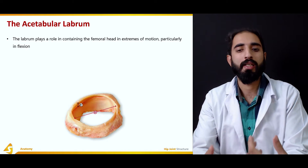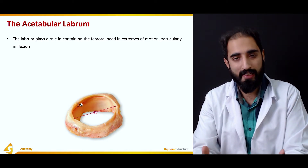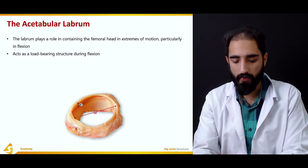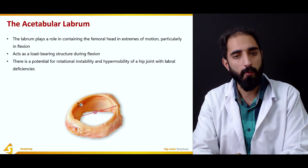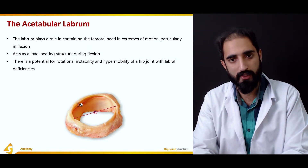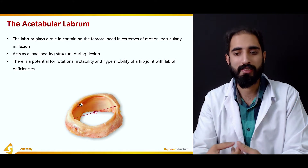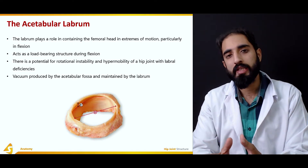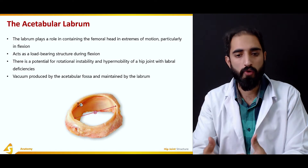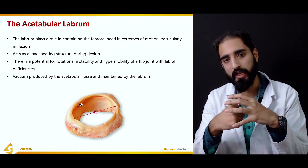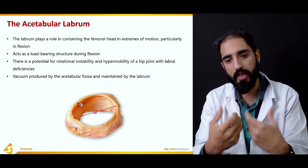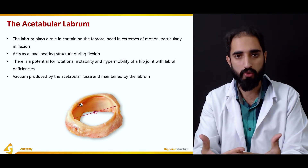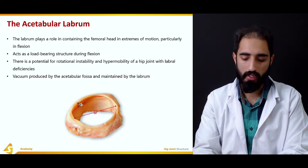The labrum plays a role in containing the femoral head at extremes of motion — particularly in flexion — contributing to stability and also acting as a load-bearing structure during flexion. There is potential for rotational instability and hypermobility of the hip joint with labral deficiencies, since its stabilizing role is lost with deficiency, injury, or tear. One stability factor in the hip joint is a vacuum produced in the acetabular fossa which sucks in the femoral head; whenever there is venting or deficiency of the labrum, this vacuum phenomenon is lost, decreasing stability.